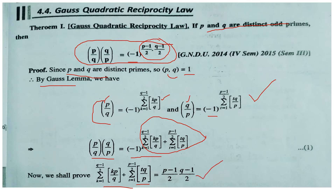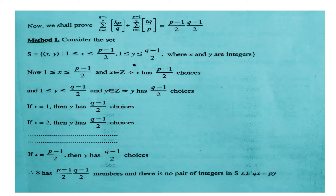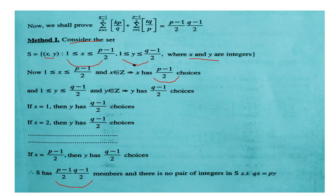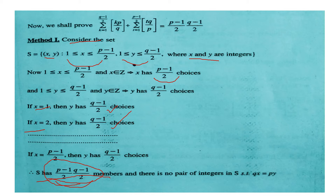To prove this, consider the set S which contains all pairs (x, y) such that x runs from 1 to (p−1)/2 and y runs from 1 to (q−1)/2, where x and y are integers. Since x has (p−1)/2 choices and y has (q−1)/2 choices, by the fundamental principle of counting, S has a total of (p−1)/2 · (q−1)/2 elements.